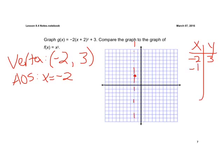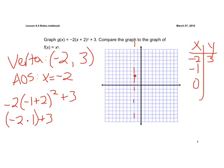And two points to the right, so negative 1, 0. If we plug in negative 1, let's write out this whole equation here. Negative 2 times negative 1 plus 2 squared plus 3. Again, order of operations, very important here. Parentheses first. Negative 1 plus 2 is 1. 1 squared is 1. So we have negative 2 times 1 plus 3. Again, order of operations, do multiplication first. So we have negative 2 plus 3, and we're going to get a 1.